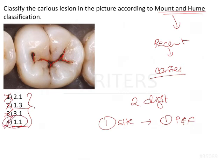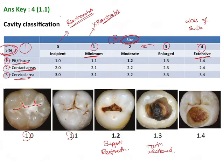This classification can be asked in various ways. Here we have been given an image and asked to score it. Conversely, we can be given a score and asked which site or size it denotes. This is a simple and important classification to note from an exam point of view.